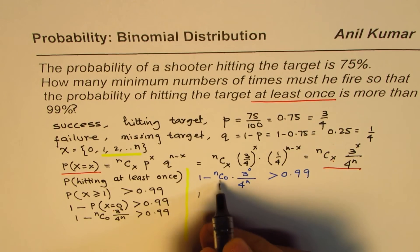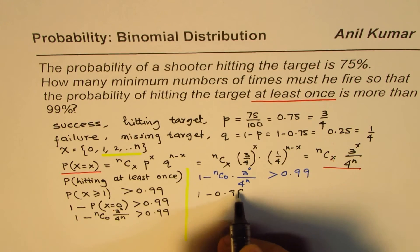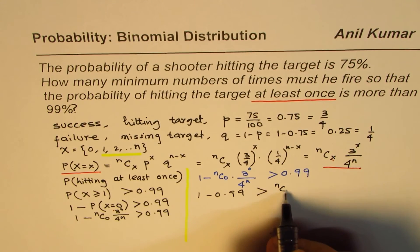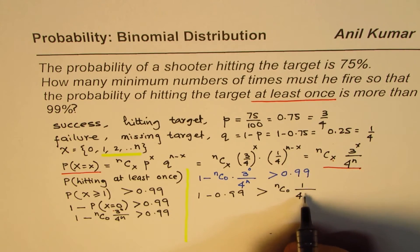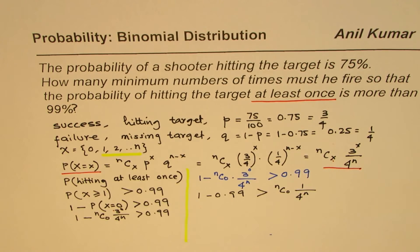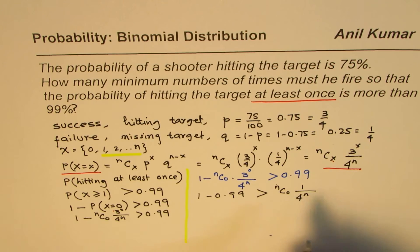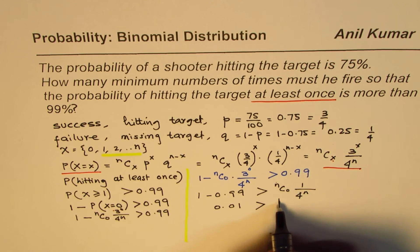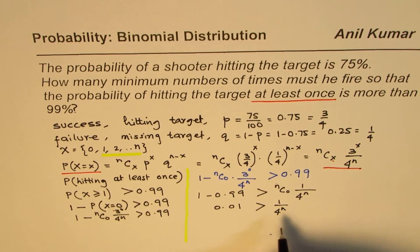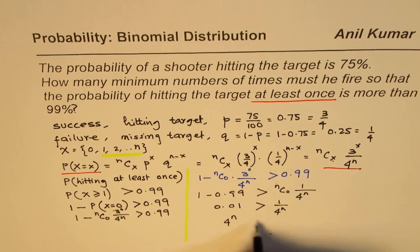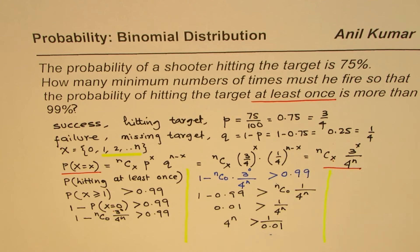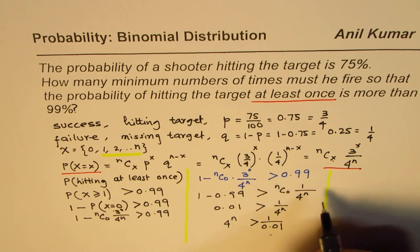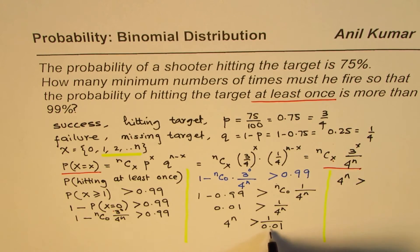Rearranging: (1/4)^n < 0.01, because 1 minus 0.99 = 0.01. Cross-multiplying gives us 4^n > 1 over 0.01, which equals 100. So we need to find the minimum integer n such that 4^n is greater than 100.